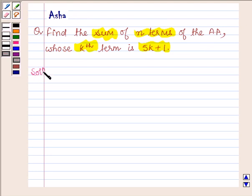Let's start with the solution. Let kth term equal AK. This is given to us as 5k plus 1.